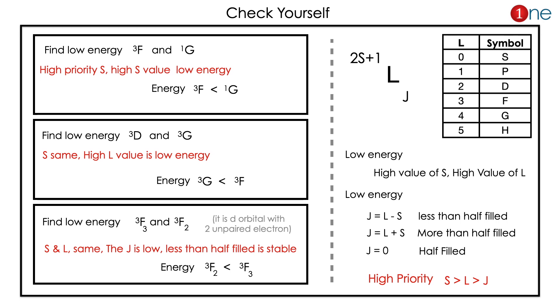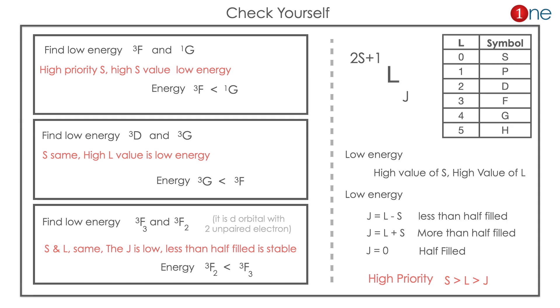For the next value, find the low energy between 3F3 and 3F2. Here spin is same, L is same, only difference is J. If you find the J, it's a representation of D orbital. Less than half filled, so lesser value will be more stable. So 3F2 will be lower energy.